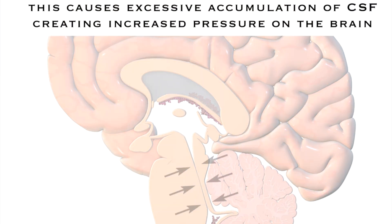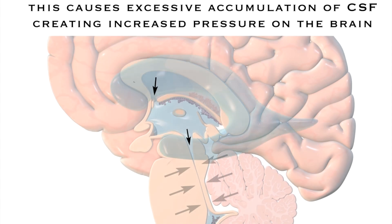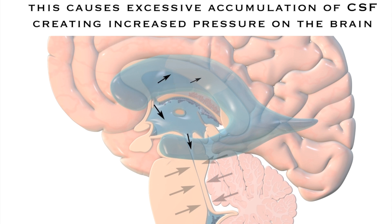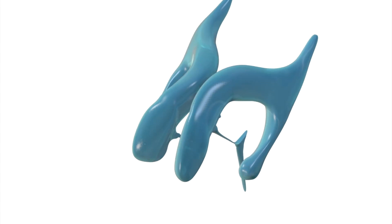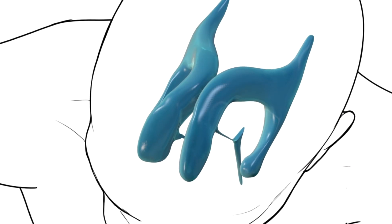This creates enlargement of the third and lateral ventricles, which can create increased pressure on the brain. With CSF unable to exit the ventricular system, we need a new and novel approach to create an outflow tract for patients such as mine.